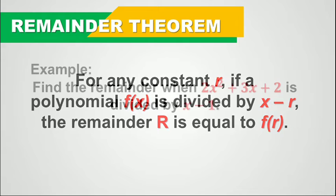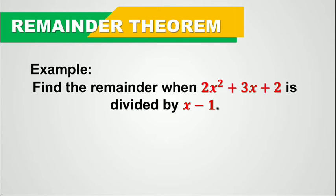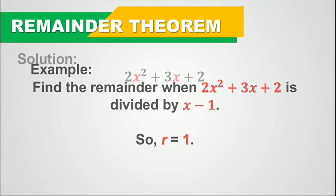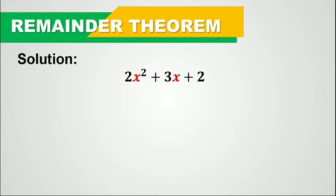So let's take this example for you to understand how this theorem works. We have here: find the remainder when 2x squared plus 3x plus 2 is divided by x minus 1. So our r here is equal to 1. So the only thing that we need to do is just to substitute the value of r to the variable x.